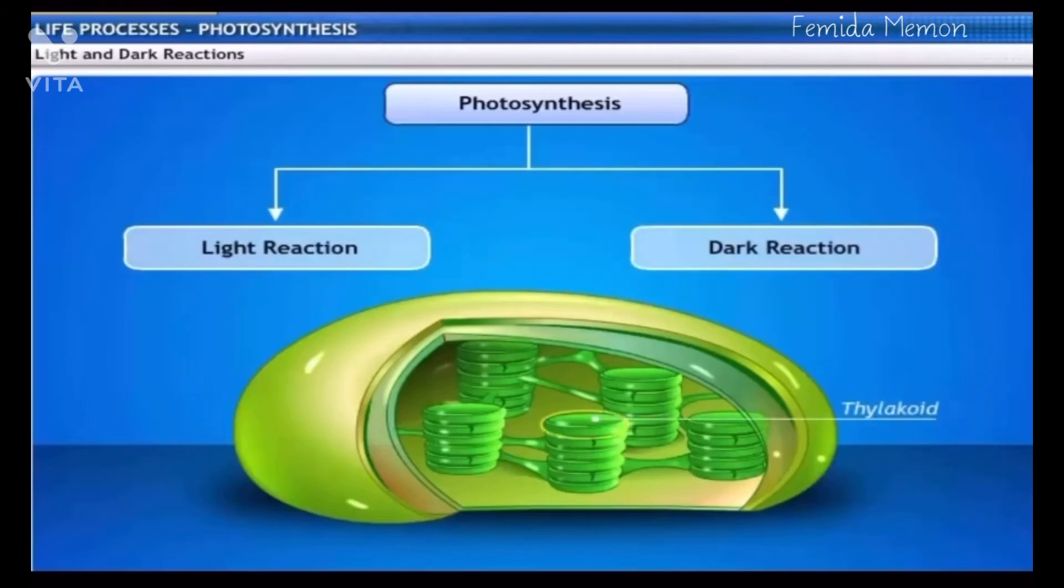Light reaction takes place in the thylakoids of the chloroplast. Dark reaction takes place in the stroma of the chloroplast.